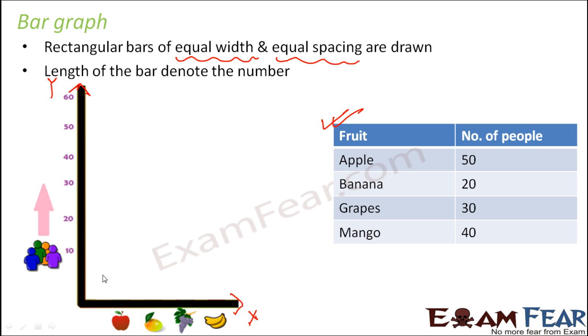Once you have plotted them, for example for apple it's 50, you draw a bar such that the height of the bar is 50. When you draw the second bar, remember that the width of the first bar and the width of the second bar should be the same.